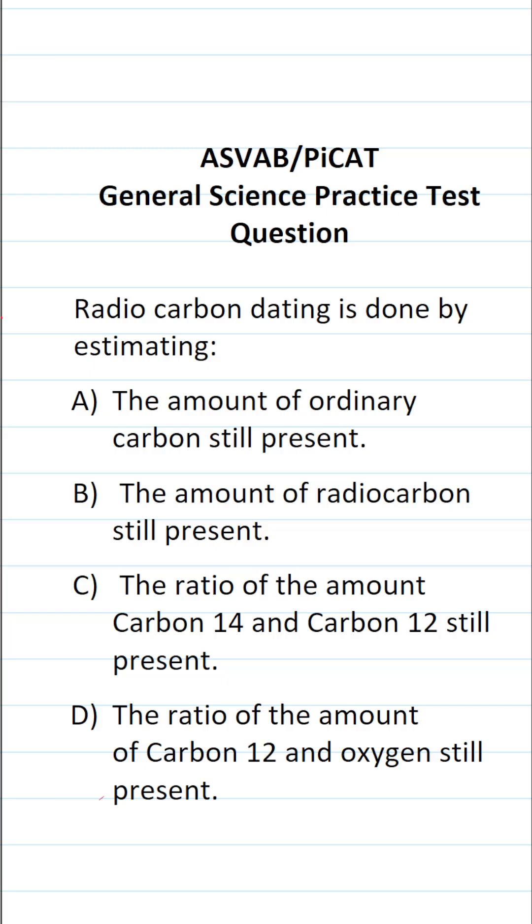General science practice test question for the ASVAB and PICAT says: radiocarbon dating is done by estimating A) the amount of ordinary carbon still present, B) the amount of radiocarbon still present, C) the ratio of the amount of carbon-14 and carbon-12 still present, D) the ratio of the amount of carbon-12 and oxygen still present.